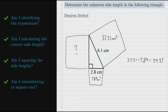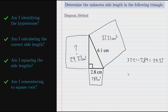Last but not least, we have to remember that 29.37 is not our final answer — that number is the area of this square. We were asked to find the unknown side length, and in order to do that we need to find which number multiplied by itself gives us 29.37. We do that by taking the square root. The square root of 29.37 is approximately 5.4, and that is the unknown side length.